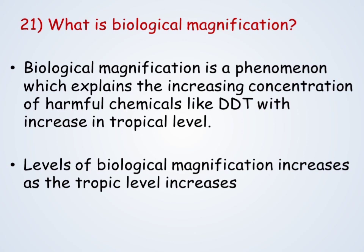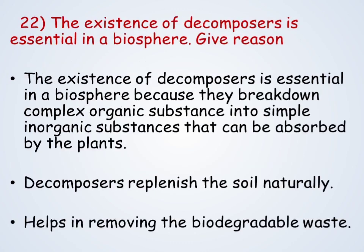What is biological magnification? Biological magnification is a phenomenon which explains the increasing concentration of harmful chemicals like DDT with increase in the trophic level. As the trophic level increases, the level of biological magnification also increases. This phenomenon is called biological magnification.